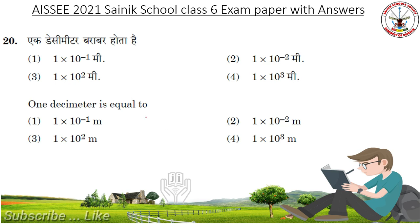One decimeter is equal to 1 into 10 to the power of minus 1 meters.